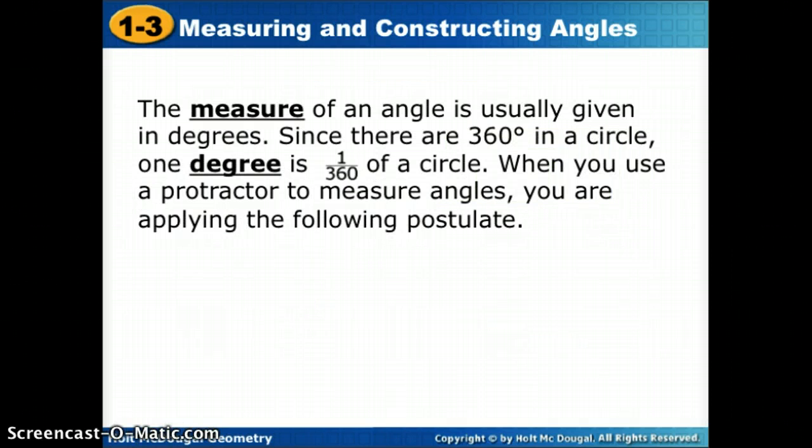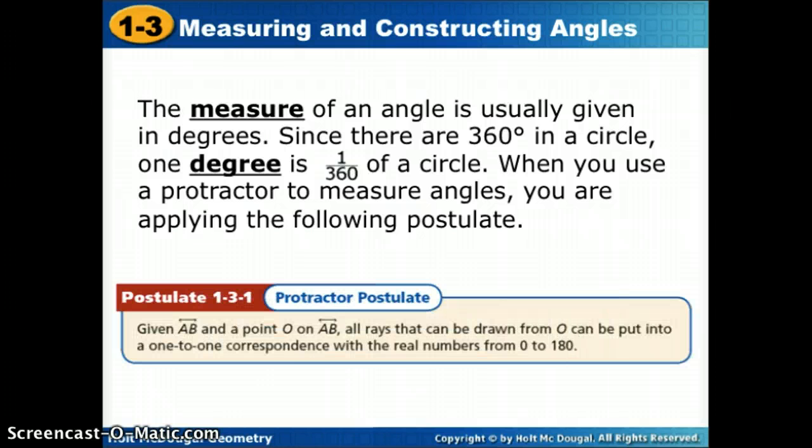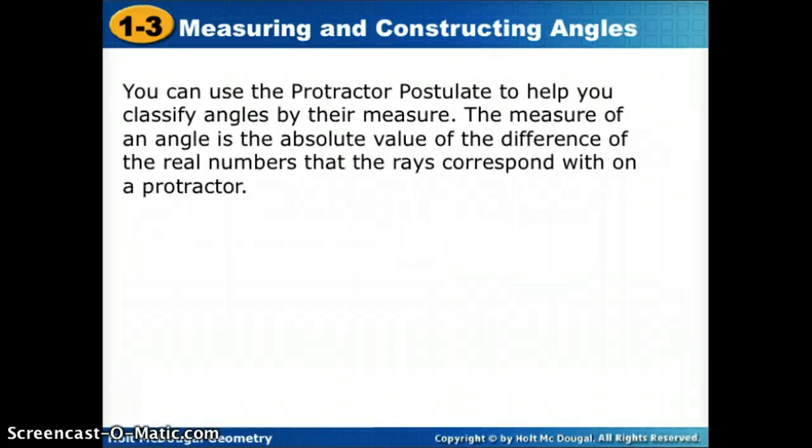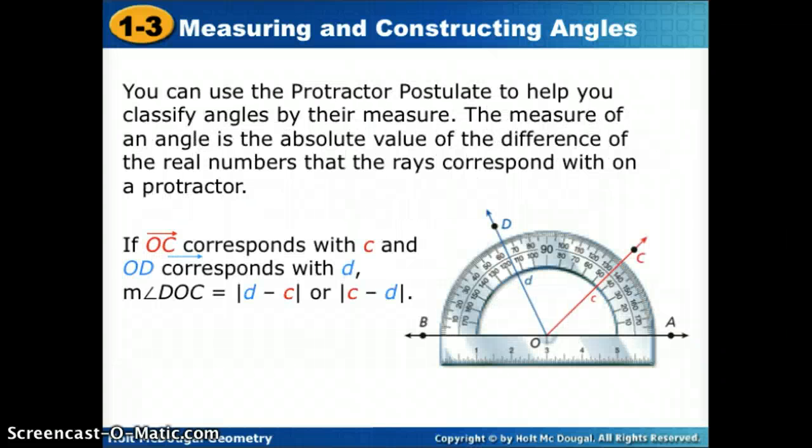You guys know about measuring an angle. The measure of an angle, we use degrees, and there's 360 degrees in a circle. So one degree would be 1/360th of that circle. We had a ruler postulate that gave a segment a measure. The same thing happens with a protractor postulate. All that does for us is give us a measure to an angle.